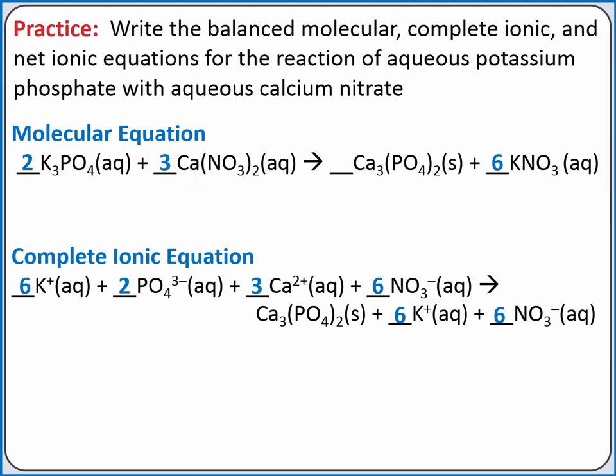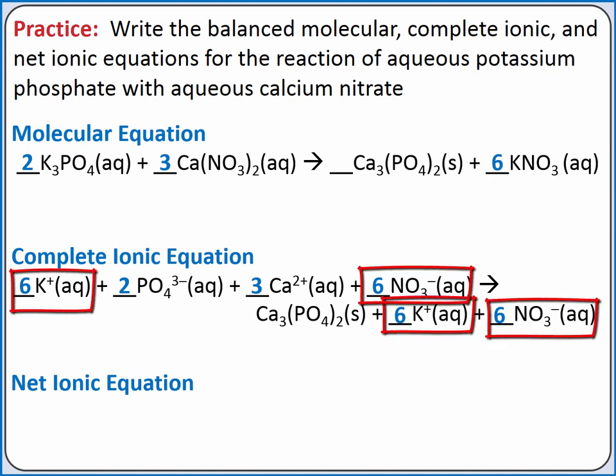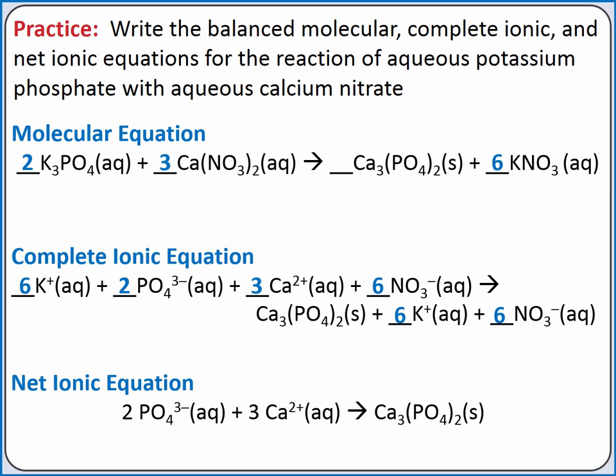Last, we can write the net ionic equation by removing the spectator ions, which show up on both sides of the complete ionic equation. Our spectator ions are potassium and nitrate, so our net ionic equation is 2 phosphate ions combined with 3 calcium ions to produce solid calcium phosphate.